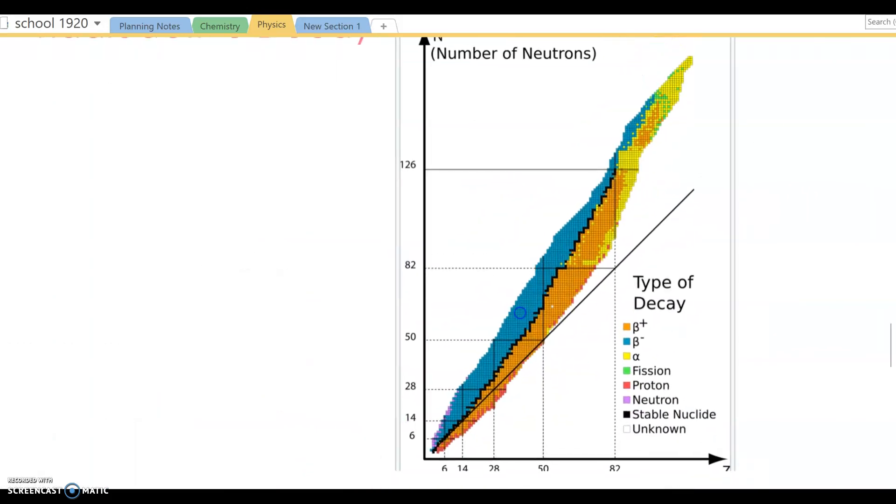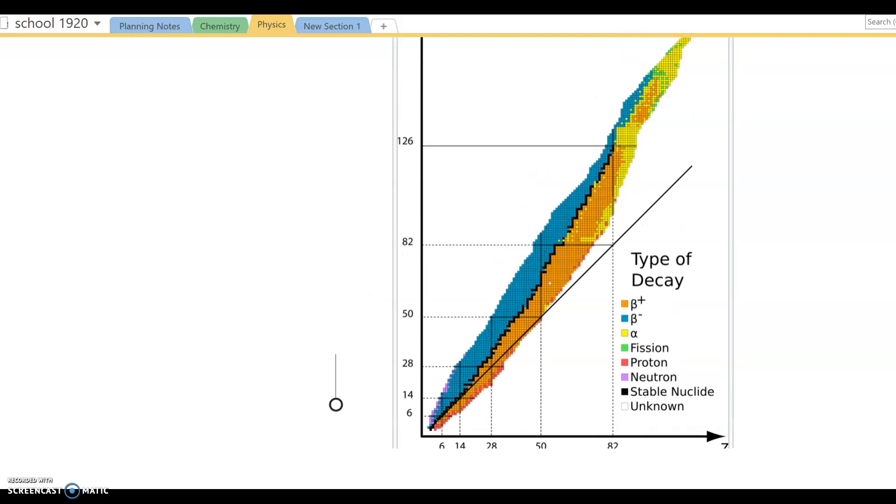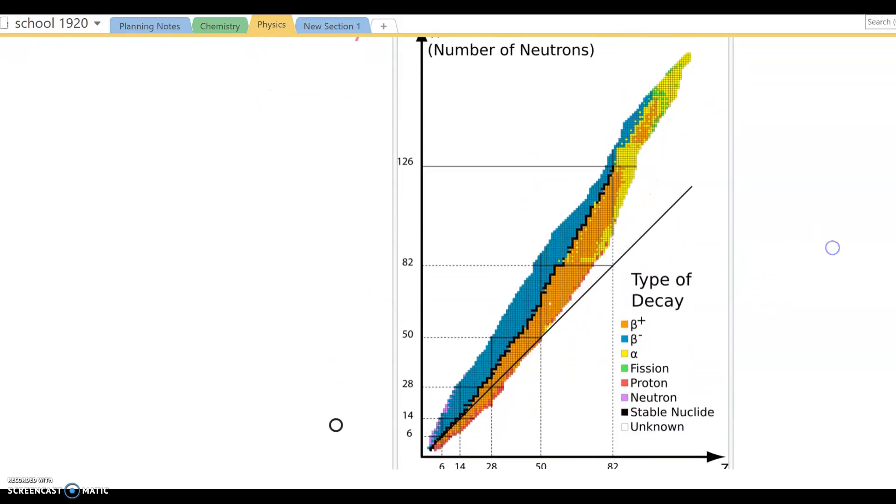On our x-axis we have the number of protons, and on our y-axis we have the number of neutrons. So we see that we have a black line of stable isotopes.